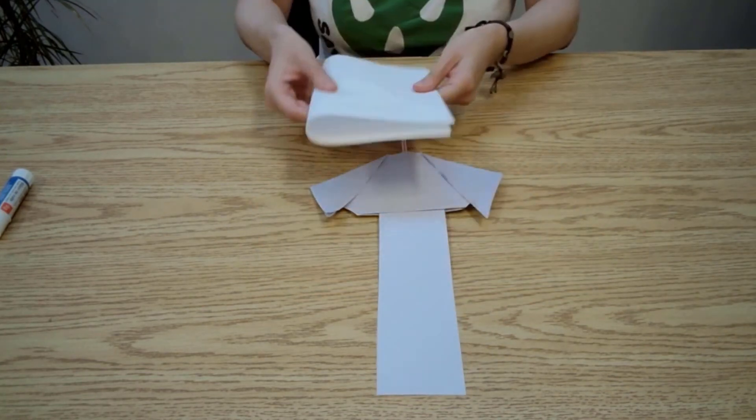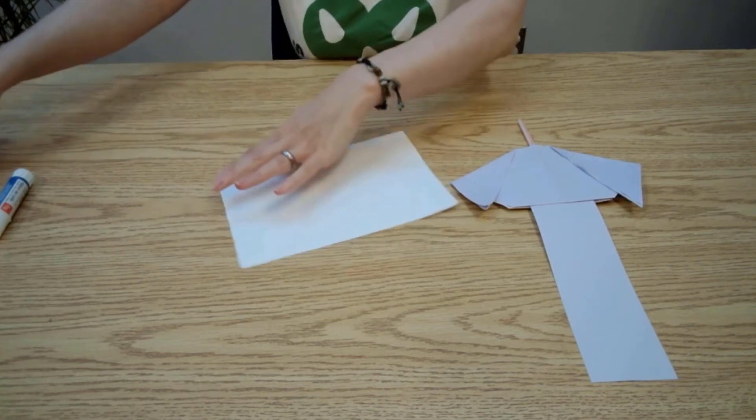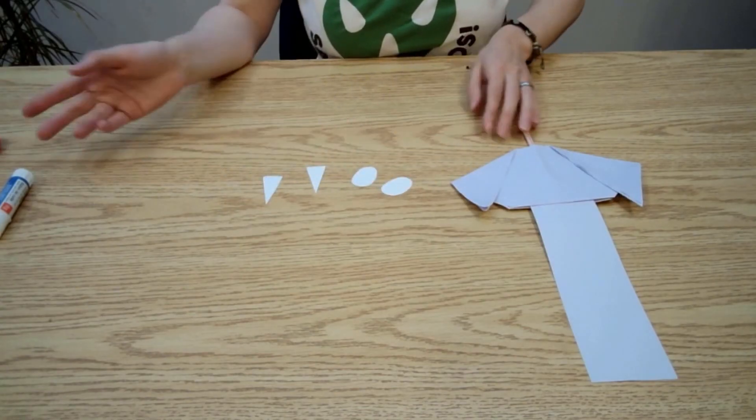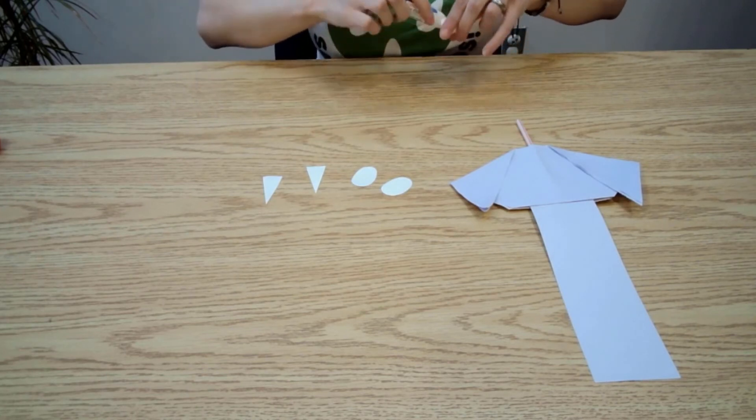Now with another scrap piece of paper you can cut out shapes for eyes and tusks and other features and glue them to your elephant's face. Do whatever you like.